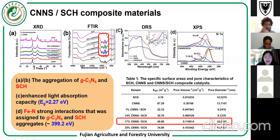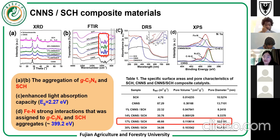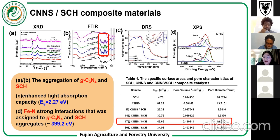The XRD and FTIR results show the characteristic features of both Schwertmannite and carbon nitride. We also studied the light absorption efficiency of our materials by solid-state UV-vis spectroscopy, which indicated a shift towards the visible light region, with a calculated band gap energy of about 2.27 electron volts. This suggests the composite materials can be excited by visible light or sunlight. XPS analysis shows the presence of iron-nitrogen bonding, indicating a strong iron-nitrogen interaction between the Schwertmannite and the carbon nitride.